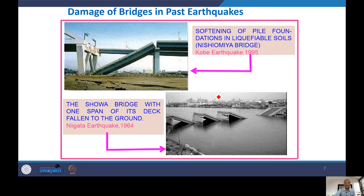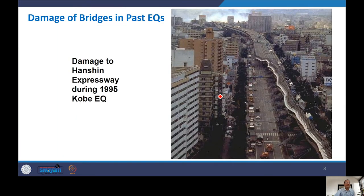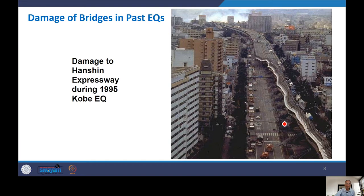This is a classical example of soil amplification — the effect of SSI on the Hanshin Expressway during the Kobe earthquake. You can clearly see the deck of the bridge appears intact, but there are damages to the piers. Some piers fell down, causing the deck above to fall as well. This failure of the piers is again related to soil amplification.